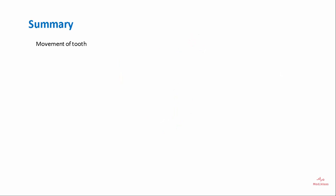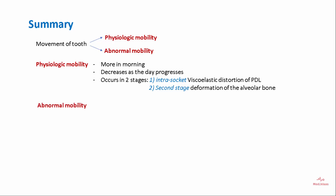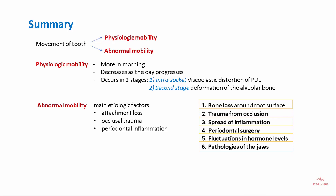To summarize: tooth mobility can be physiologic or abnormal. Physiologic mobility is more in the morning, decreases as the day progresses, and occurs in two stages — intra-socket viscoelastic distortion of the periodontal ligament, and deformation of the alveolar bone. Abnormal tooth mobility can be due to attachment loss, occlusal trauma, and periodontal inflammation, among other contributing factors. Mobility is graded using the tooth mobility index by S.C. Miller (1950).